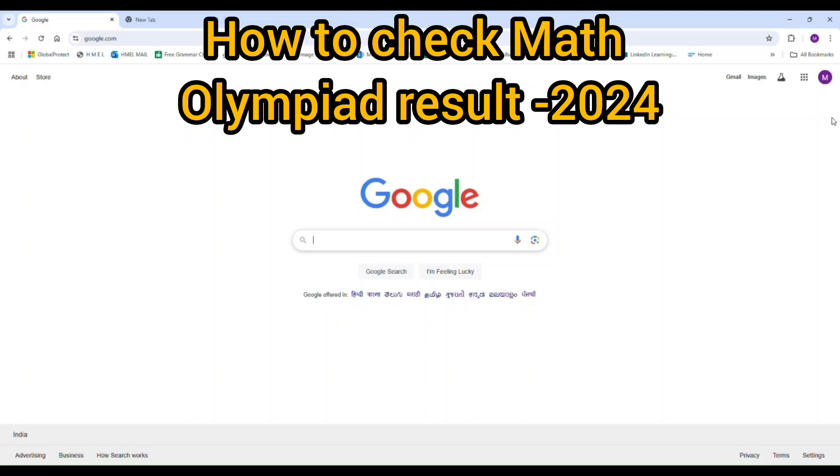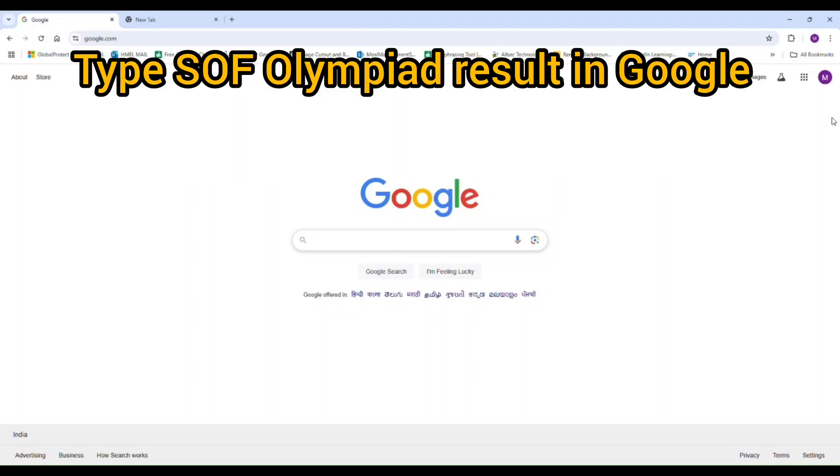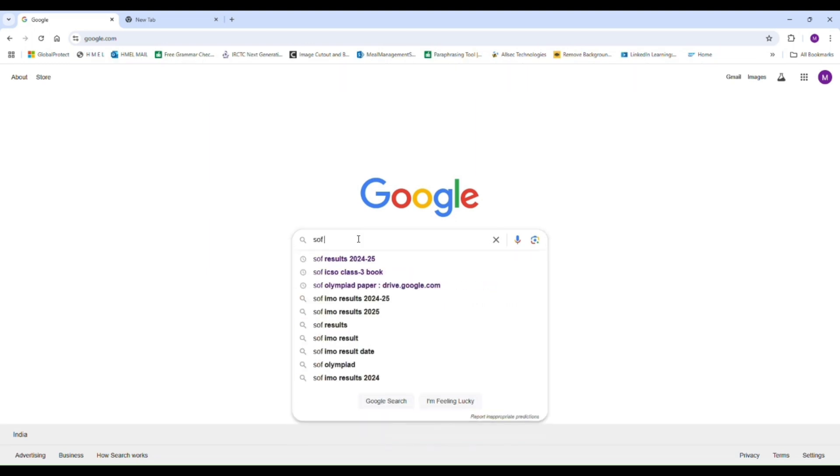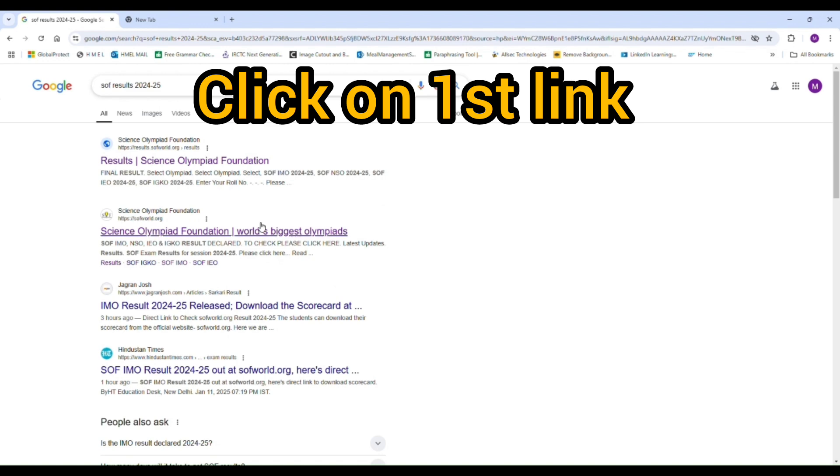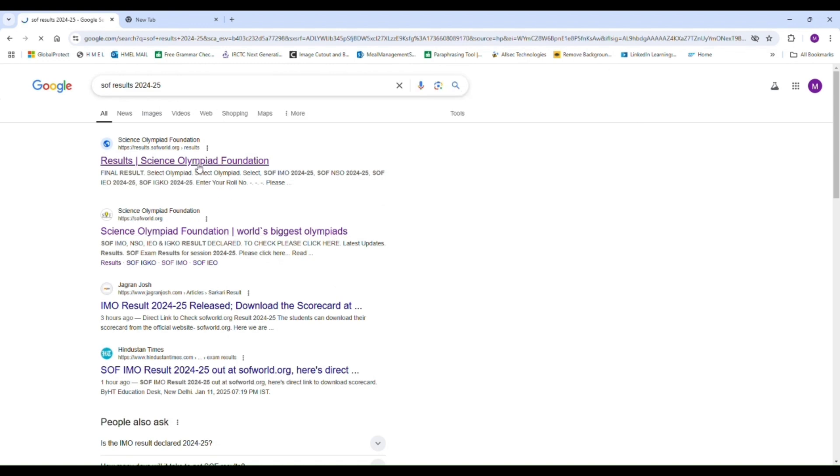SOF Math Olympiad paper 2024 result has been announced. Steps for checking the IMO result: Just go to google.com, search for the Olympiad result, and click on the first link.